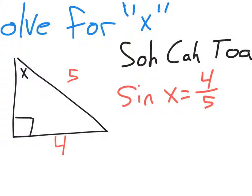So sine is our guy. We've got sine of some angle x, we don't know what that angle is, it equals the opposite divided by the hypotenuse.